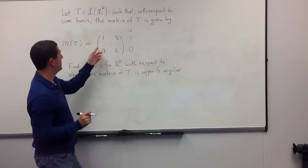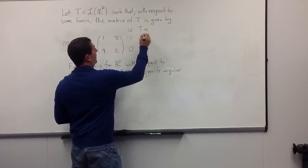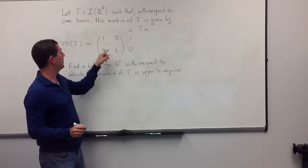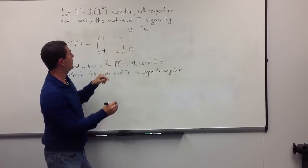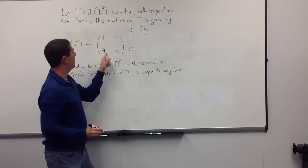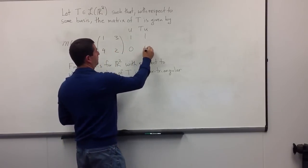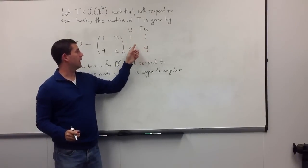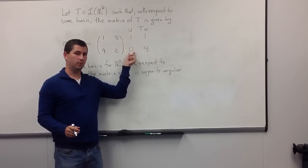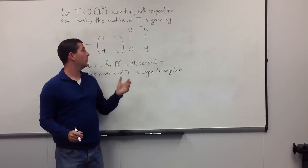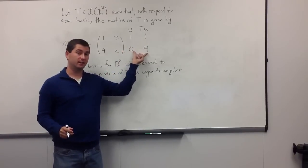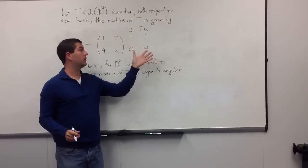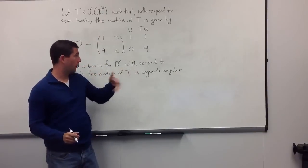The first time I apply the operator, I'll get Tu. Applying the operator is the same as multiplying this matrix by a column vector, which gives me (1, 4). I notice that the new vector (1, 4) is not a multiple of (1, 0), and (1, 0) is not a multiple of (1, 4), which means these are not yet linearly dependent — they're actually linearly independent. In fact, they form a basis for the vector space R².